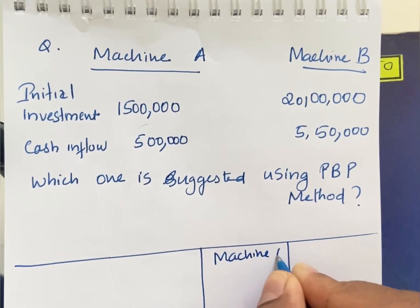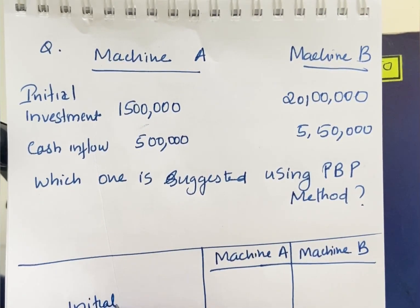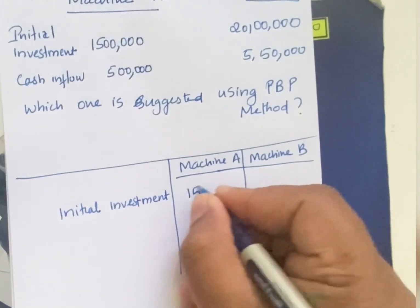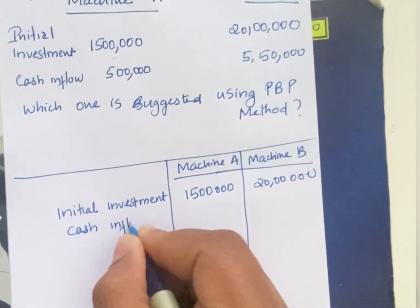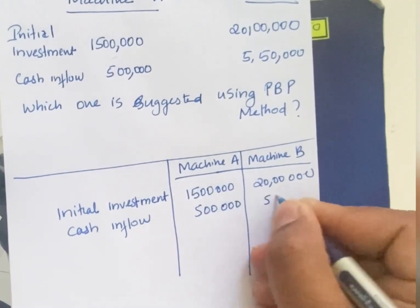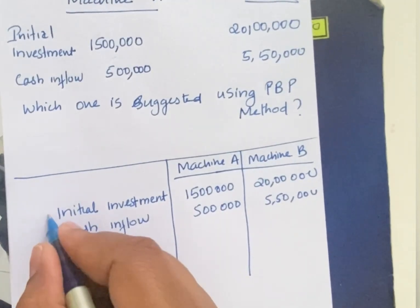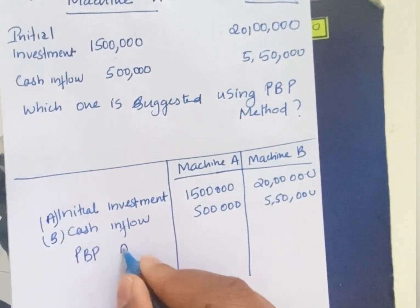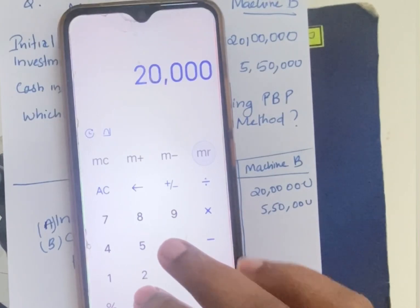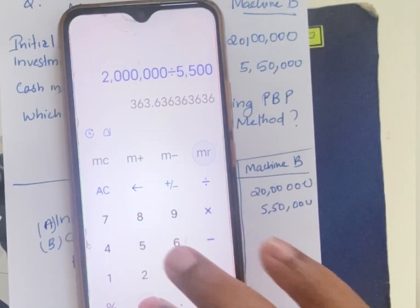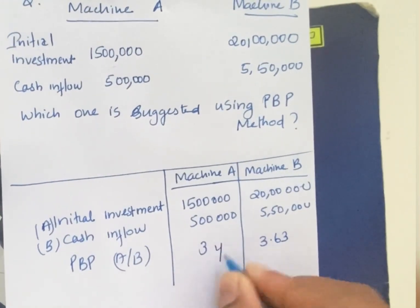Machine A and B. Initial investment is $15,000,000 and $20,000. Cash inflow is $5,000,000 and $5,000,000. Payback period: initial investment of $15,000,000 divided by $5,000,000 equals 3 years, and $20,000,000 divided by $5,000,000 equals 4 years.